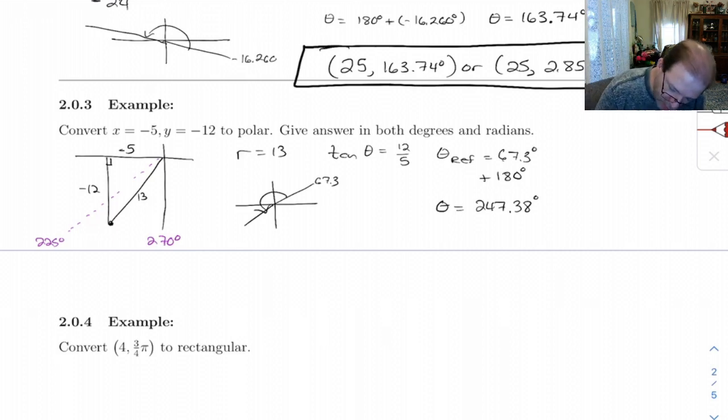And I should be putting little degree symbols on all these since those are degrees. So my, let's see, is that in the correct place? Yeah, that's between 225 and 270. So let's see. My point, then, is going to have polar coordinates 13, 247.38 degrees or 13.